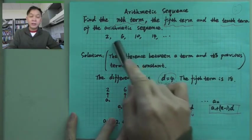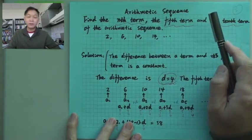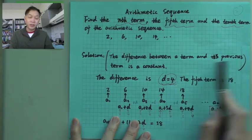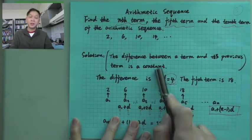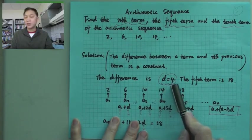Now, this kind of sequence is called an arithmetic sequence. The difference between a term and its previous term is a constant. In this case, it's 4. The difference in this case is 4.